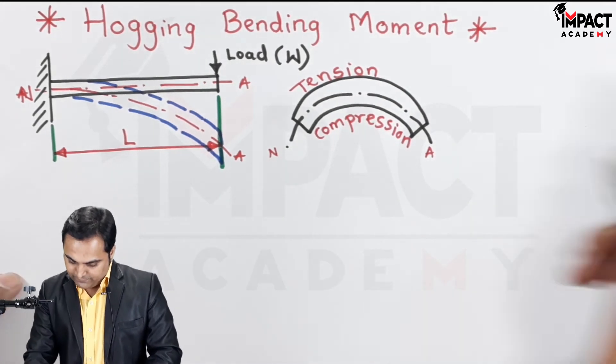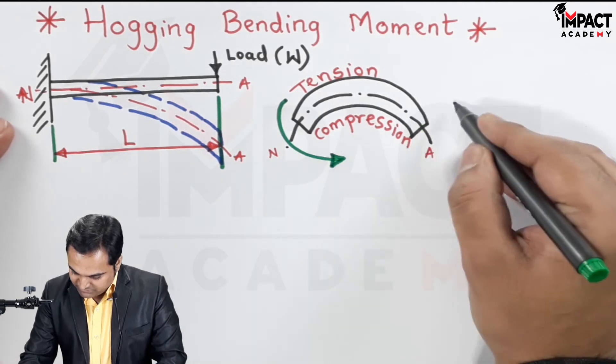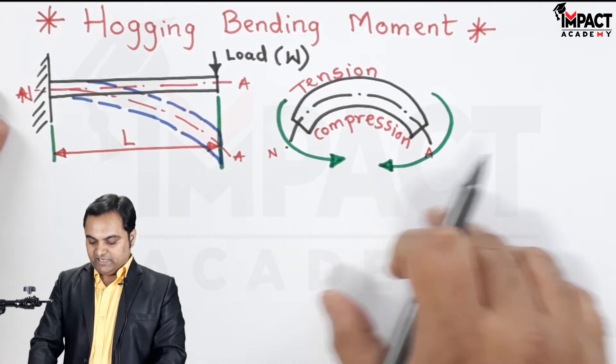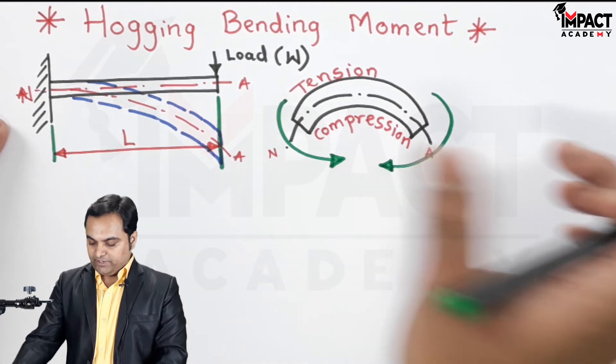And since the bending is in this way, it can be imagined that here the moments are acting along these directions. Because of that there is the hogging bending moment.